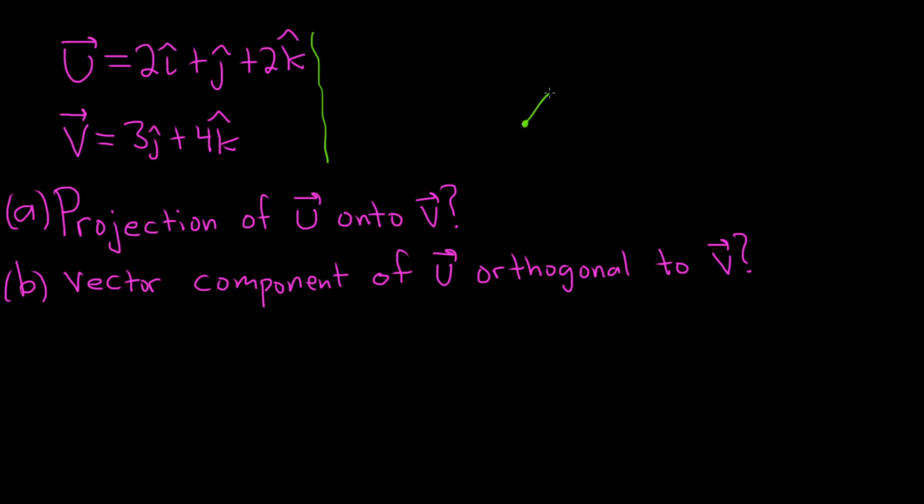Say we have a vector here called u, and another vector down here called v. Now if we take vector u and project it onto v, like we drop it down to v, we're left with a vector here.